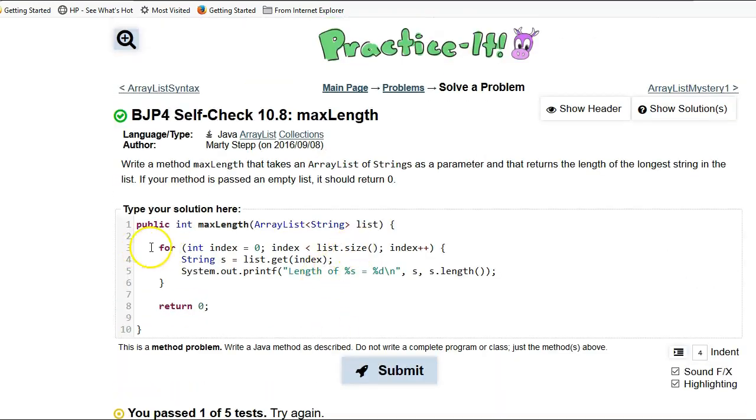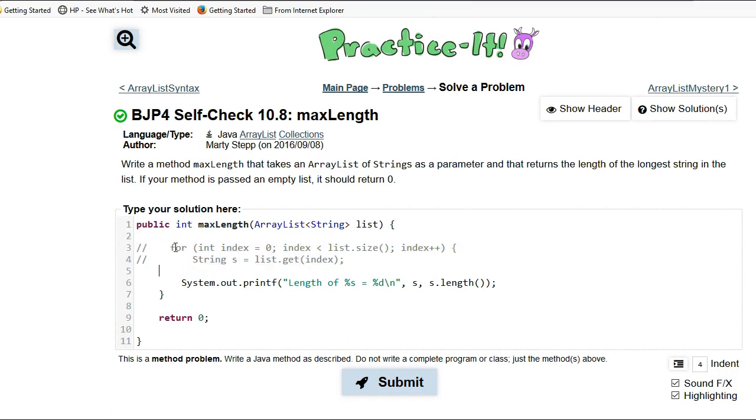The other way to do it is, let me comment out these two lines and you'll see how much simpler this looks. For—and this is a for-each loop—for string s in list. So what that's going to do is it's going to do the exact same thing as this code here, but it looks a bit simpler, doesn't it?